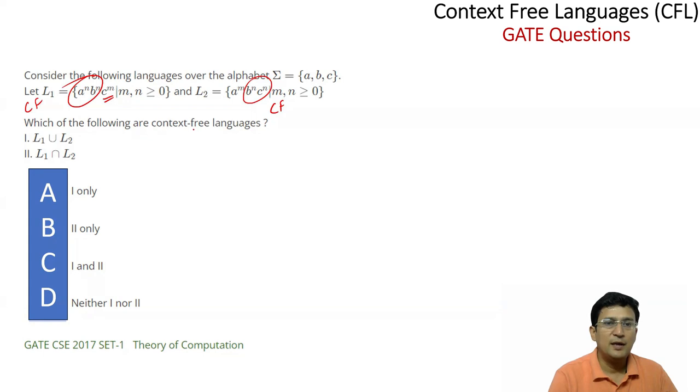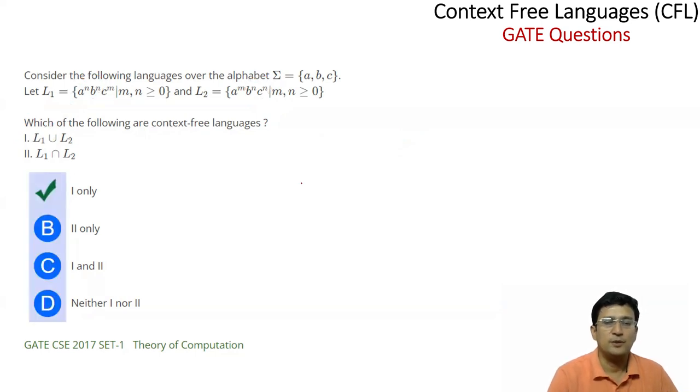Which of the following are context free languages? Context free languages are closed under union but they are not closed under intersection. So option one is correct according to me. And yes, this is the correct option. We will take more examples in the next lecture.